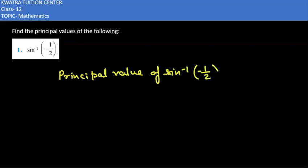The principal value of sin inverse of negative 1 by 2 is π by 6. How do we get that?